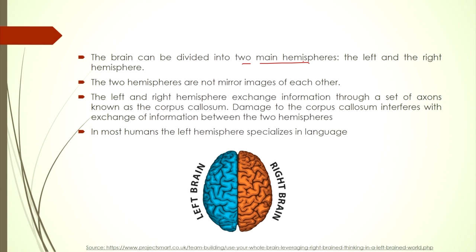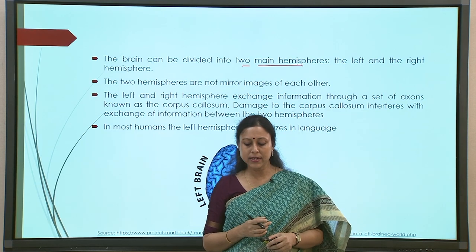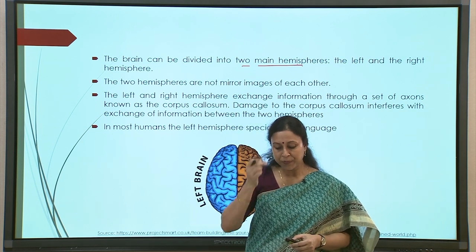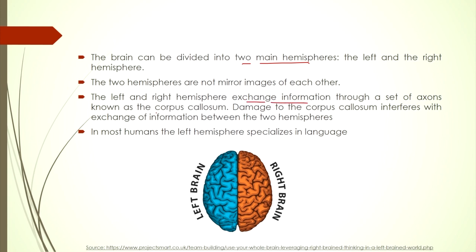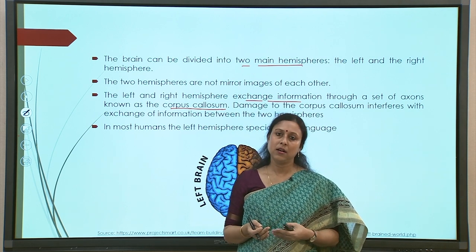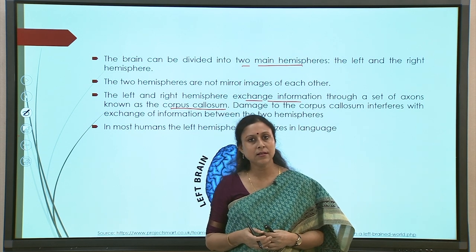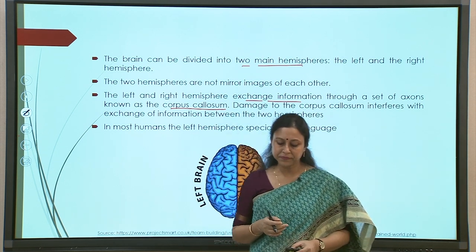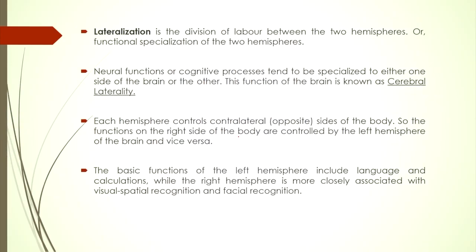The two hemispheres constantly talk to each other, cooperating to carry out most functions. They exchange information through a set of axons called the corpus callosum, which connects both parts of the brain. Damage to the corpus callosum interferes with the exchange of information between the two hemispheres. In most humans, the left hemisphere specializes in language — that is the very fundamental understanding as far as cerebral laterality is concerned.